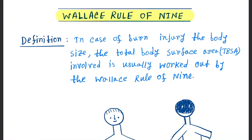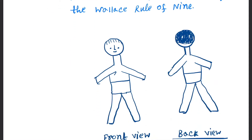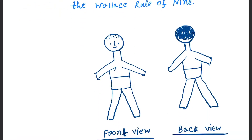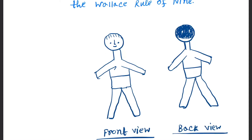Hello friends, today our topic is the Wallace Rule of Nine. The definition is: in case of burn injury, the total body surface area involved is usually worked out by the Wallace Rule of Nine. This means you can calculate the total body surface area in a burn-injured patient.